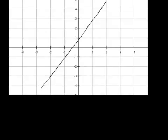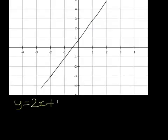Let's think about the equation of a straight line. Here we've got a straight line, and it goes through the point 0,1 and it's got gradient 2, so one of the ways we can write this is y equals 2x plus 1. The 2 tells us the gradient, or the direction of the line, and the 1 — the point 0,1 — that's the y-intercept, that's the point on the line.